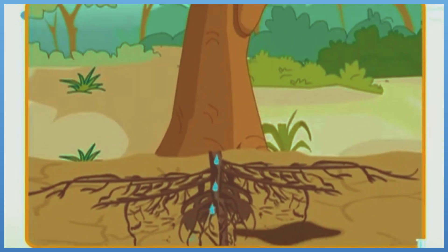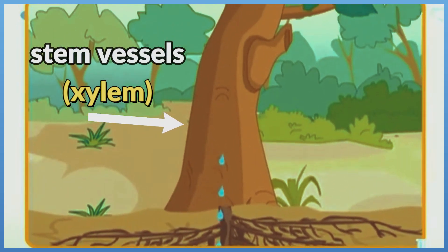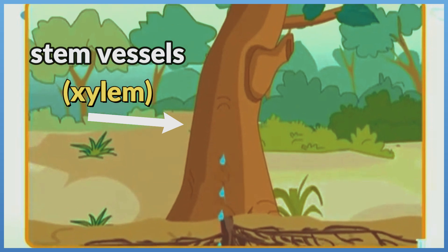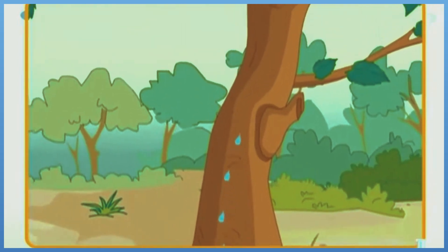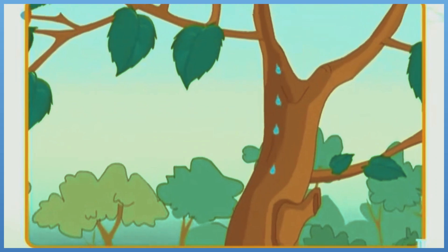Water and nutrients move up the plant's stem through tubes or vessels called xylem. Smaller vessels of xylem connect the stem to the leaves.